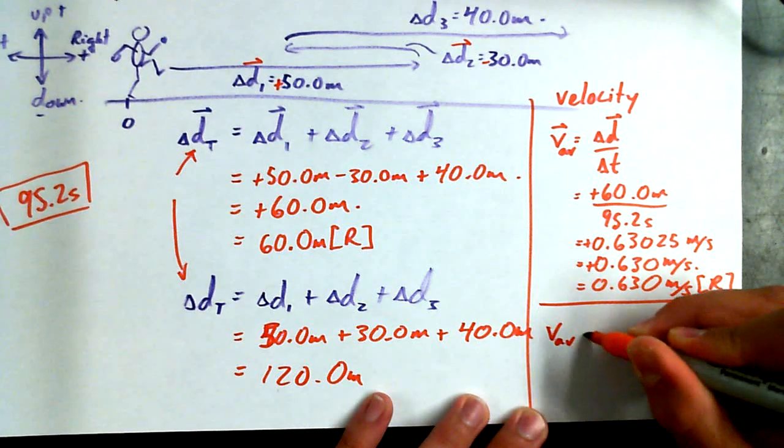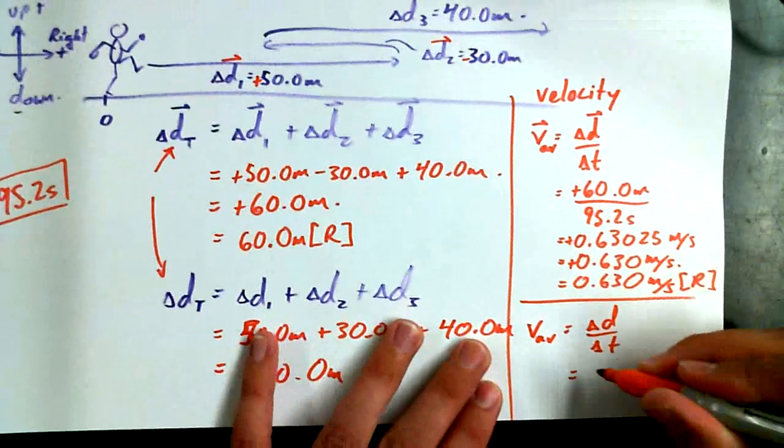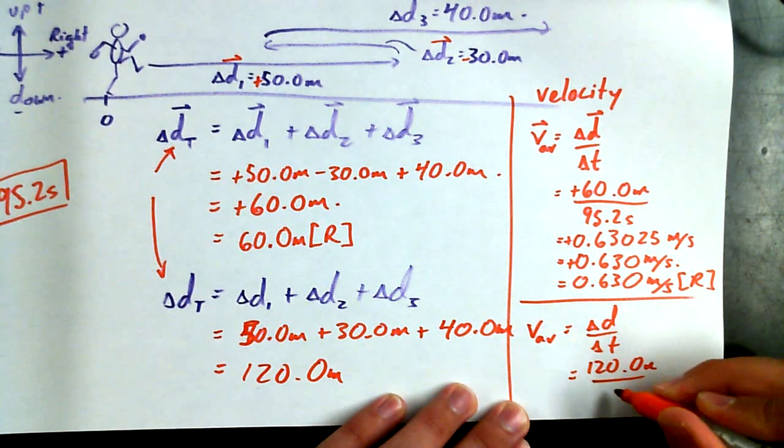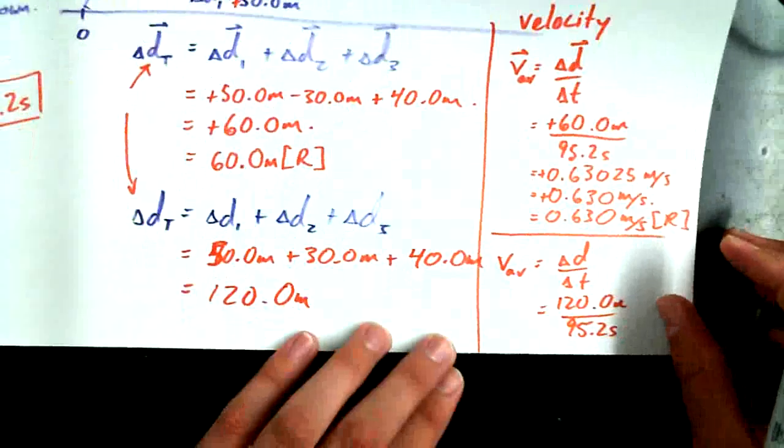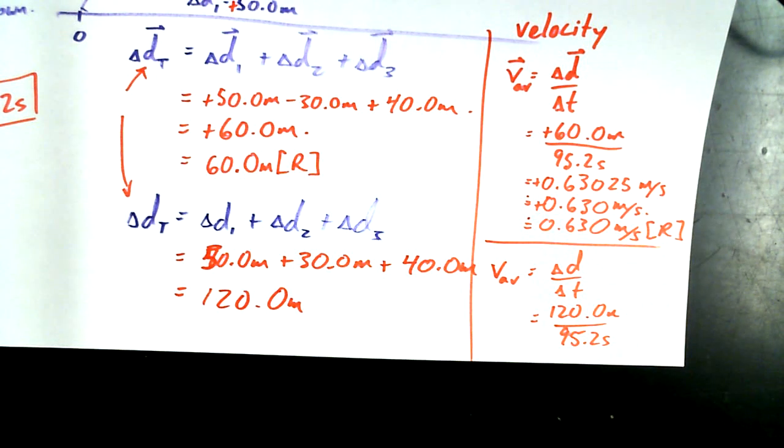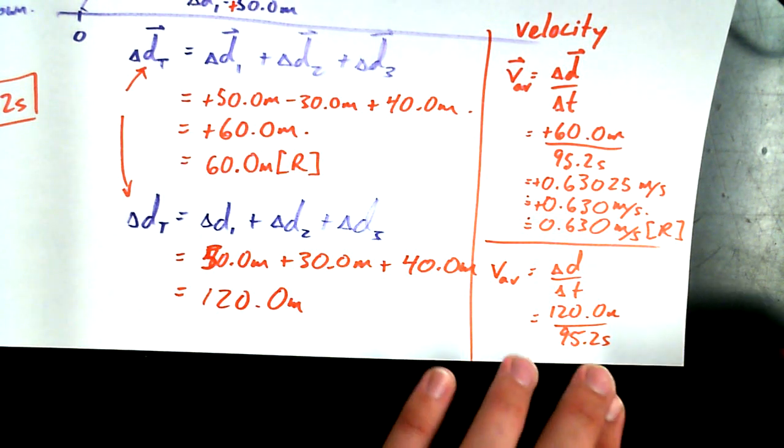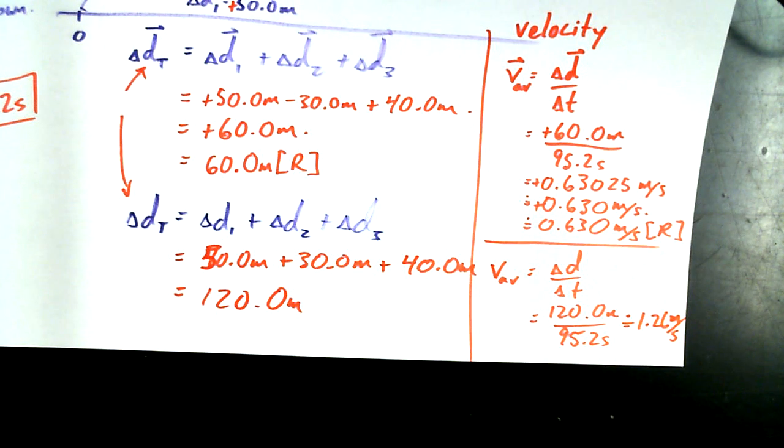Average speed. So let's do this. Delta D total divided by delta T, or for our situation, 120.0 meters divided by 95.2 seconds. And I'm running out of space on my piece of paper. But what's the average speed? 120 divided by 95.2. We only need it to three sig digs. Oh, I should have said approximately equal to up here. What's 120 divided by 95.2? 1.26. So approximately 1.26 meters per second. Totally different. Velocity versus speed. Very similar symbols, but completely different meanings.